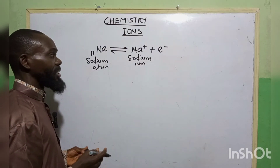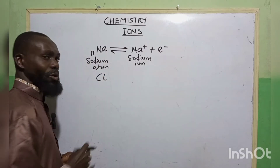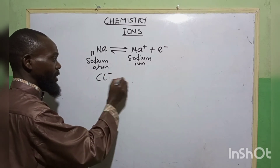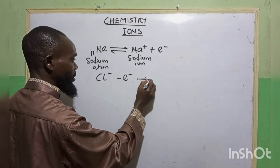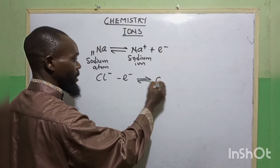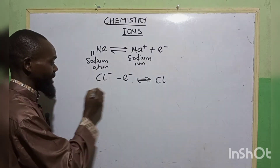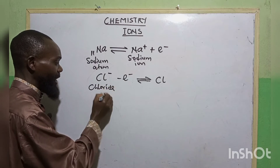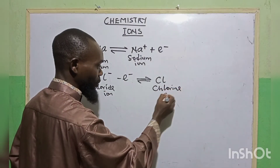Likewise, some non-metals like chlorine will always gain an electron. When chlorine gains an electron, it forms the chloride ion, while the original is the chlorine atom.